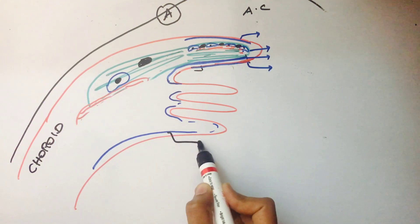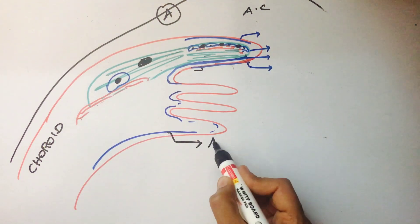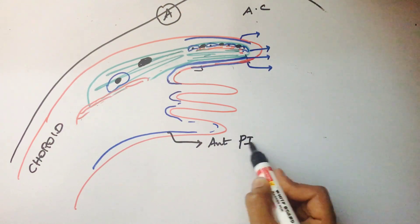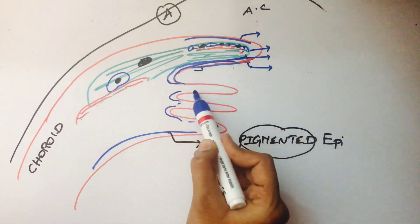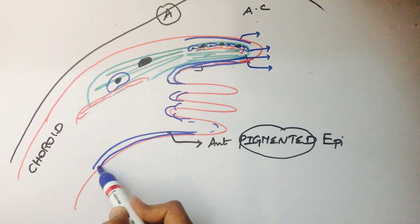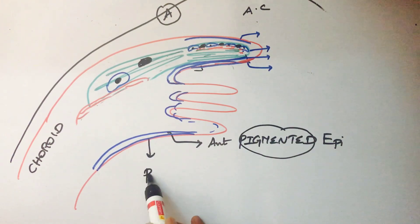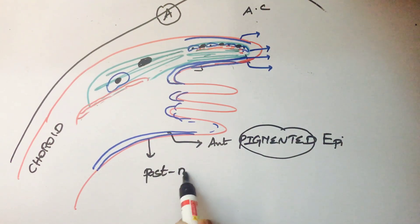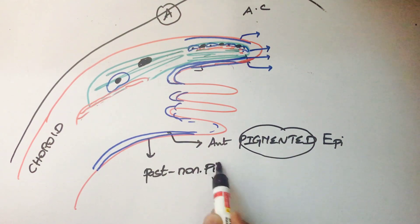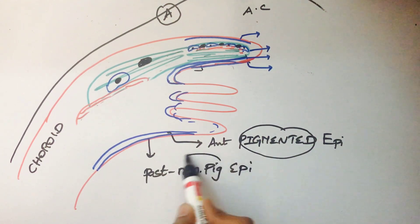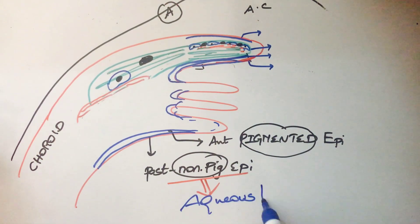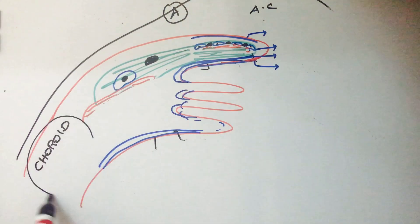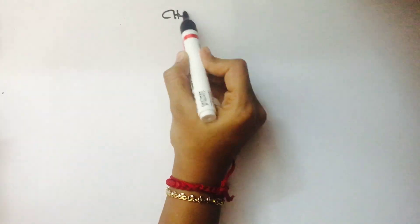The last two layers of the iris - anterior epithelium and posterior epithelium - continue into the ciliary body. The anterior epithelium continues as the anterior pigmented epithelium; the posterior epithelium continues as the posterior non-pigmented epithelium. This posterior non-pigmented epithelium secretes the aqueous humor. That is all about the ciliary body.